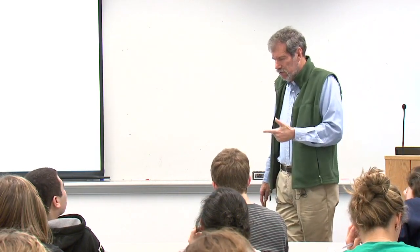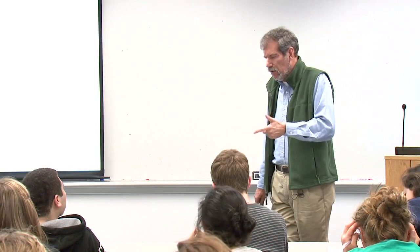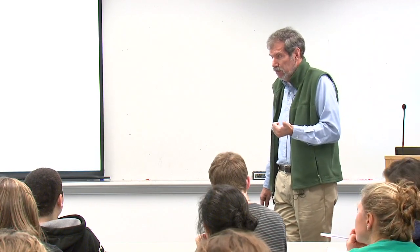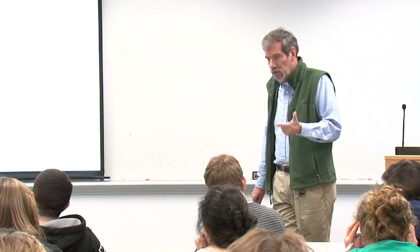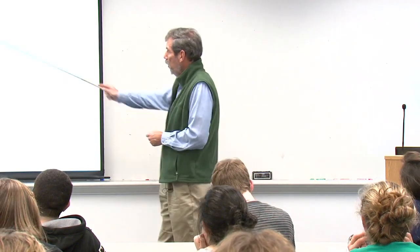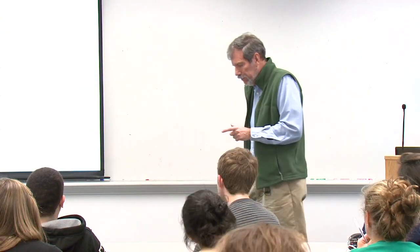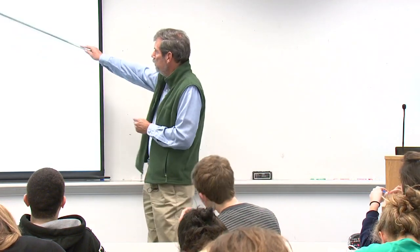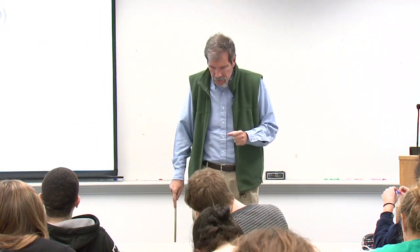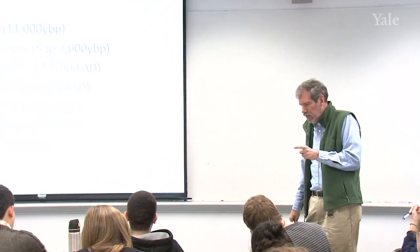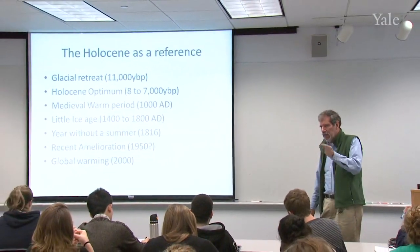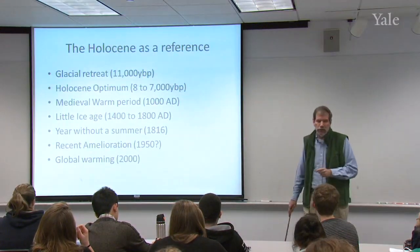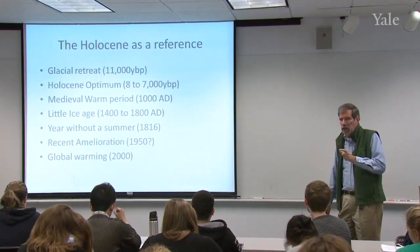The most rapid rate of retreat was 12,000 to 11,000 years ago. By about 8,000 or 9,000 years ago, most of those ice sheets were gone, leaving just the two we have today: Greenland and Antarctica. There was a period of relative warmth called the Holocene optimum between 8,000 and 7,000 years ago. Note that when discussing more recent dates, I'll shift to the BC-AD calendar rather than years before present — be aware of that notation switch.